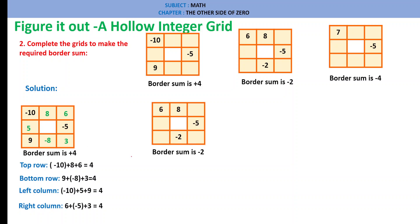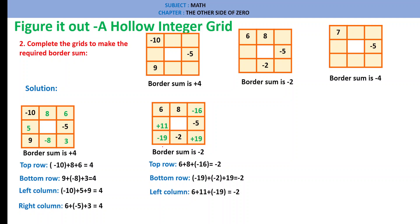The second subsection has a border sum of minus 2. Top row: 6, 8, minus 16 = minus 2. Bottom row: minus 19, plus 19 = minus 2. Left column: 6, plus 11, plus minus 19 = minus 2. Right column: minus 16, minus 5, plus 19 = minus 2.